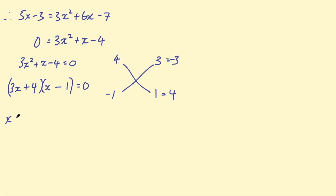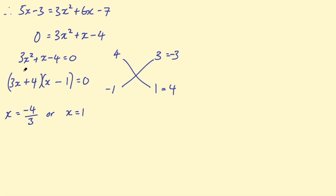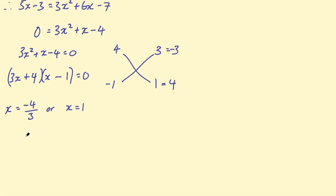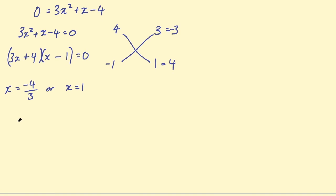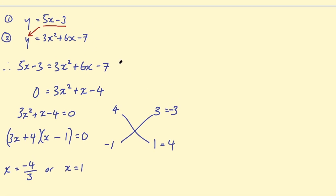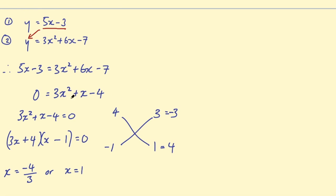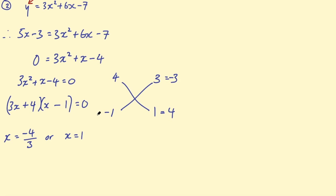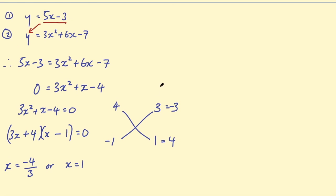If you expand that out you'll get 3x squared plus x minus 4, so therefore x equals minus 4 over 3 or x equals 1. Now I need to substitute those into the original equation to find the values of y.